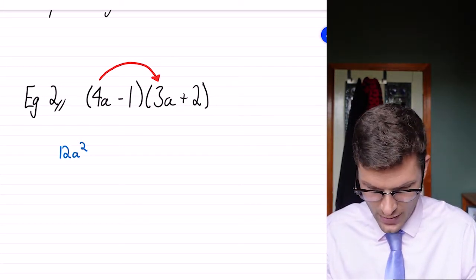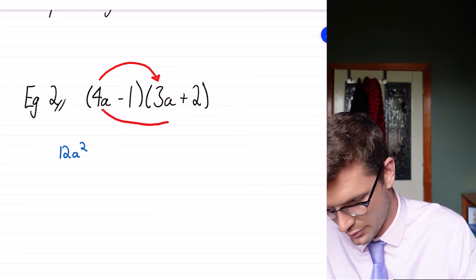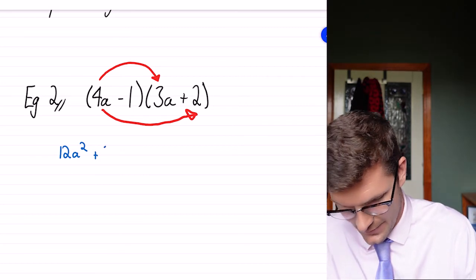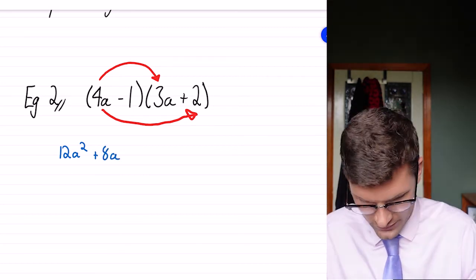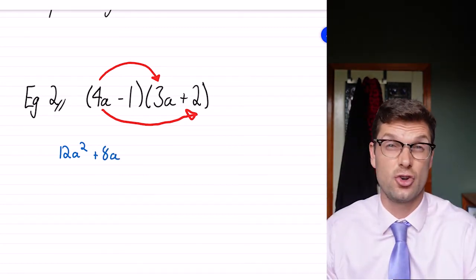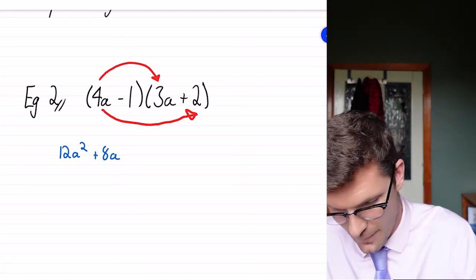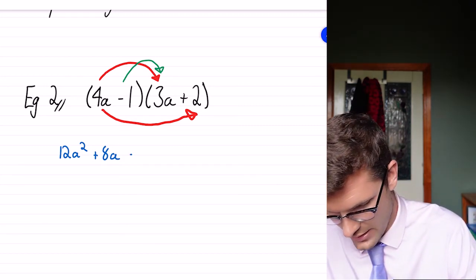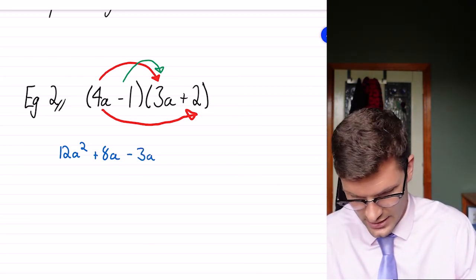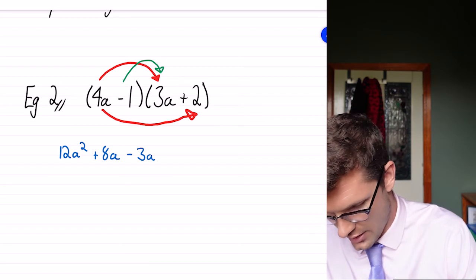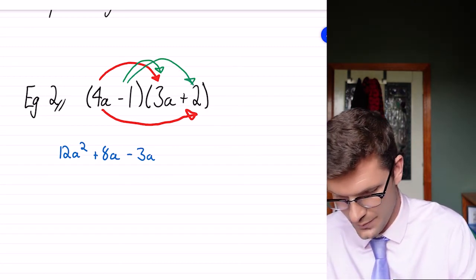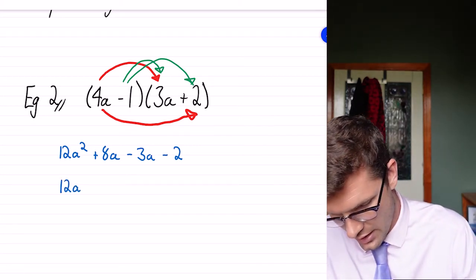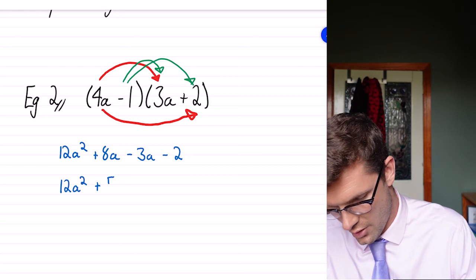Then we're doing the two outside. So it becomes 4a multiplied by 2. So we've got plus 8a. Then we've got this minus 1. Make sure we do account for the fact that it's a negative. The minus 1 times 3a. So that becomes minus 3a. And then for this last one, minus 1 times positive 2 is minus 2.